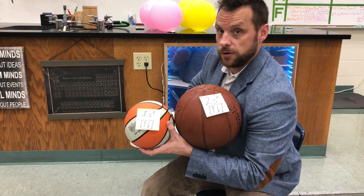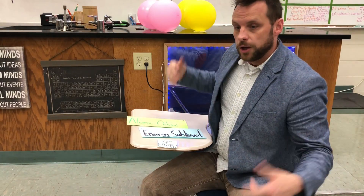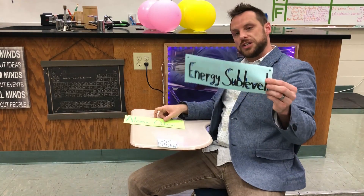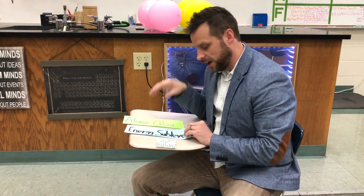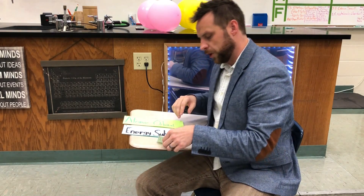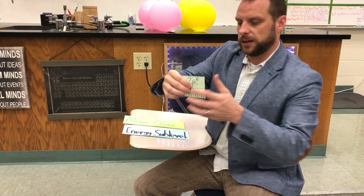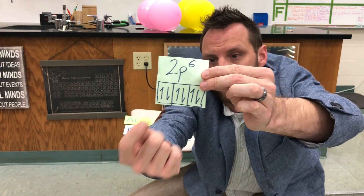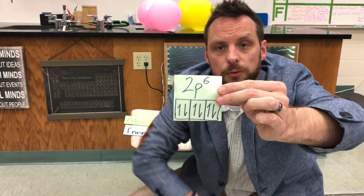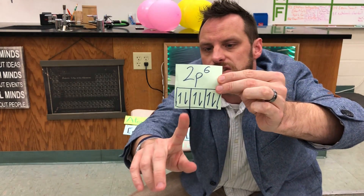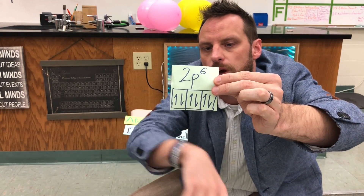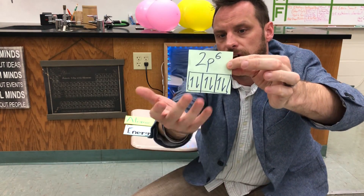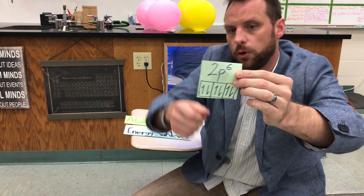Now, after you're done with that, you've got to move up to another energy sublevel — you've got to move up to a P type of sublevel. It would be written like this: 2p⁶, and you can have three orbitals in there, represented by three boxes, each of which can hold two electrons — up arrow, down arrow — so six electrons total.